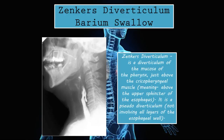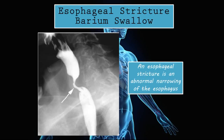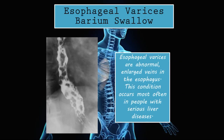Esophageal stricture on barium swallow. An esophageal stricture is an abnormal narrowing of the esophagus. You can see this tube is supposed to be the same circumference all the way down, but in the middle there is an abnormal narrowing — this is called an esophageal stricture. This is what an esophageal stricture looks like on a barium swallow test.